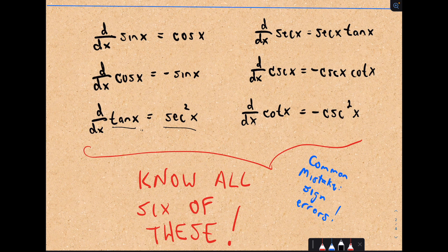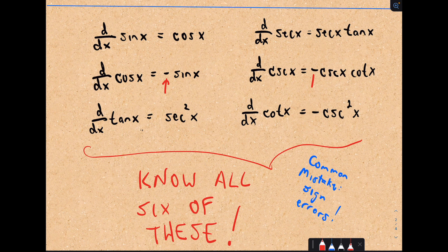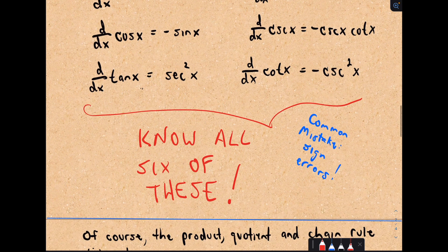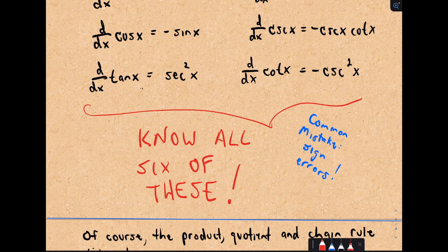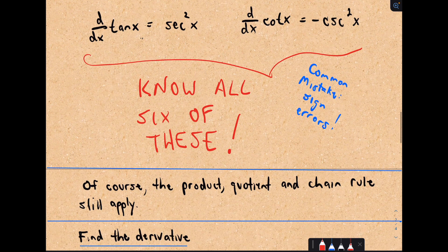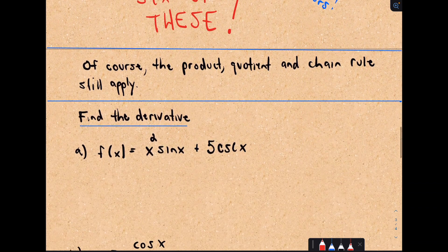Be careful about signs. Notice that if you take the derivative of any of the co-functions—cosine, cosecant, cotangent—you pick up a negative sign. If you take the derivative of sine, tangent, and secant, there's no negative sign. This is a very common mistake—people make sign errors. For those of you who eventually see anti-derivatives, be especially careful about these signs because people get them mixed up.